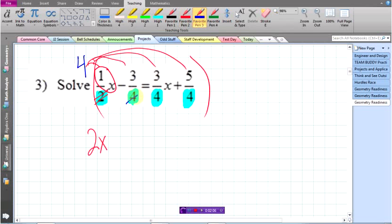Well, the next one, 4 goes into 4 one time. 1 times negative 3 is negative 3. So 4 goes into 4 one time. 1 times 3x is 3x. And the last one, 4 goes into 4 one time. 1 times 5 is 5.